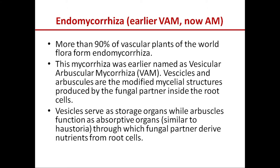First, let us talk about endomycorrhiza. Endomycorrhiza was earlier called VAM — vesicular arbuscular mycorrhiza — and now they are called arbuscular mycorrhiza or AM. More than 90% of vascular plants of the world flora form endomycorrhiza. This mycorrhiza was earlier named VAM because vesicles and arbuscals — two modified structures — are produced by the fungi inside the root cells of the plant.